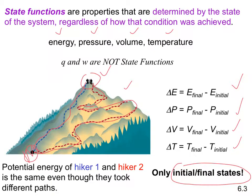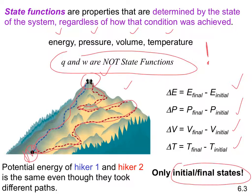Note that Q and W are not state functions. We use delta E in terms of Q and W because they are measurable. We take advantage of the fact that delta E doesn't care about the route taken, only the final result — so we can use easily measurable quantities to determine something that would be very difficult to measure if we had to account for every possible route.